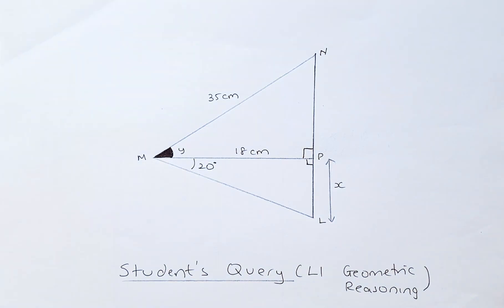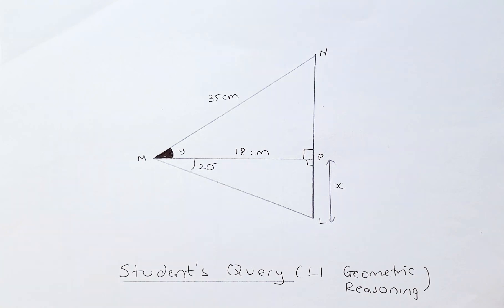Good day! We have a student query on Level 1 Geometric Reasoning. This is how to do a right-angled triangle, solving the length as well as the angle. This comes from Paul from Palmerston North, and this is how the question looks like. We have two right-angled triangles there.